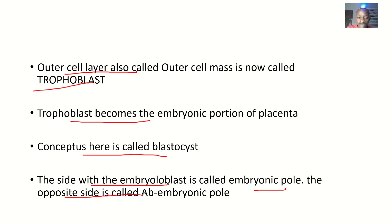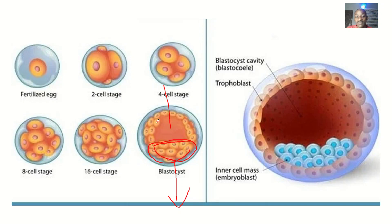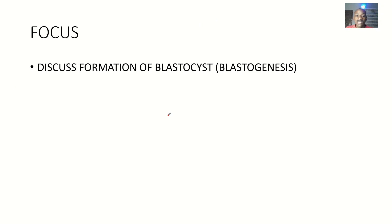The side with the embryo is called the embryonic pole, while the opposite side is called the abembryonic pole. You can see the blastocyst here with the compacted cells inside — those are the embryoblasts. The side with the embryoblasts is the embryonic pole, and the side directly opposite is the abembryonic pole. The cells surrounding all of this are the trophoblasts. That's it about the formation of the blastocyst — blastogenesis.